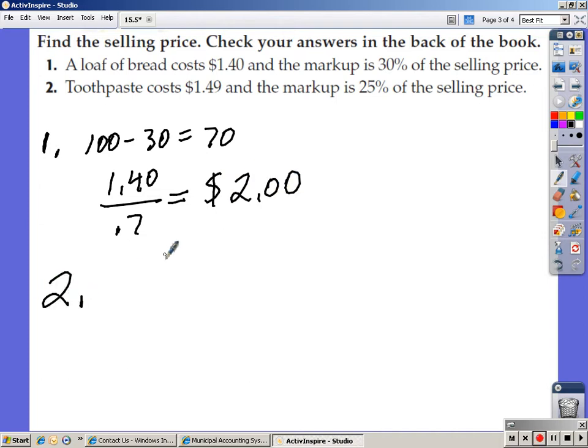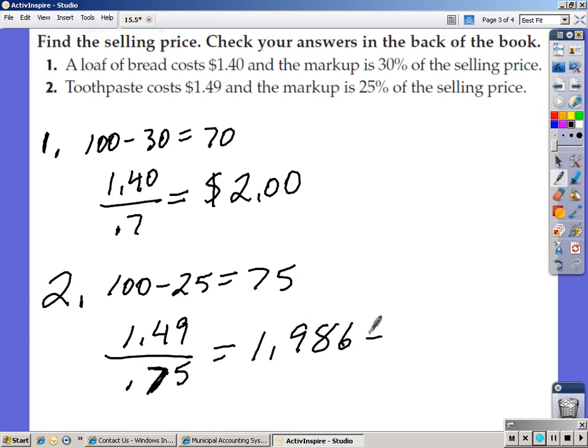Problem number two. Toothpaste costs $1.49. The markup is 25% of the selling price. 100 minus 25 is 75. $1.49 divided by .75. That is a seven, not a two. $1.49 divided by .75 equals 1.986 which is $1.99.